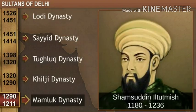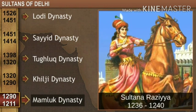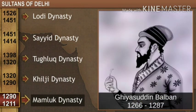Starting with the Mamluk dynasty — after Qutubuddin Aibak, his son-in-law Shamsuddin Iltutmish took the throne of Delhi. Iltutmish passed on the reign to his daughter Razia, as she was more capable than his sons. She was the only woman ruler from the Delhi Sultanate to rule Delhi. In 1256, after Razia, Balban — the chief advisor of Razia's brother — ruled Delhi. He was the last of the Mamluk rulers.